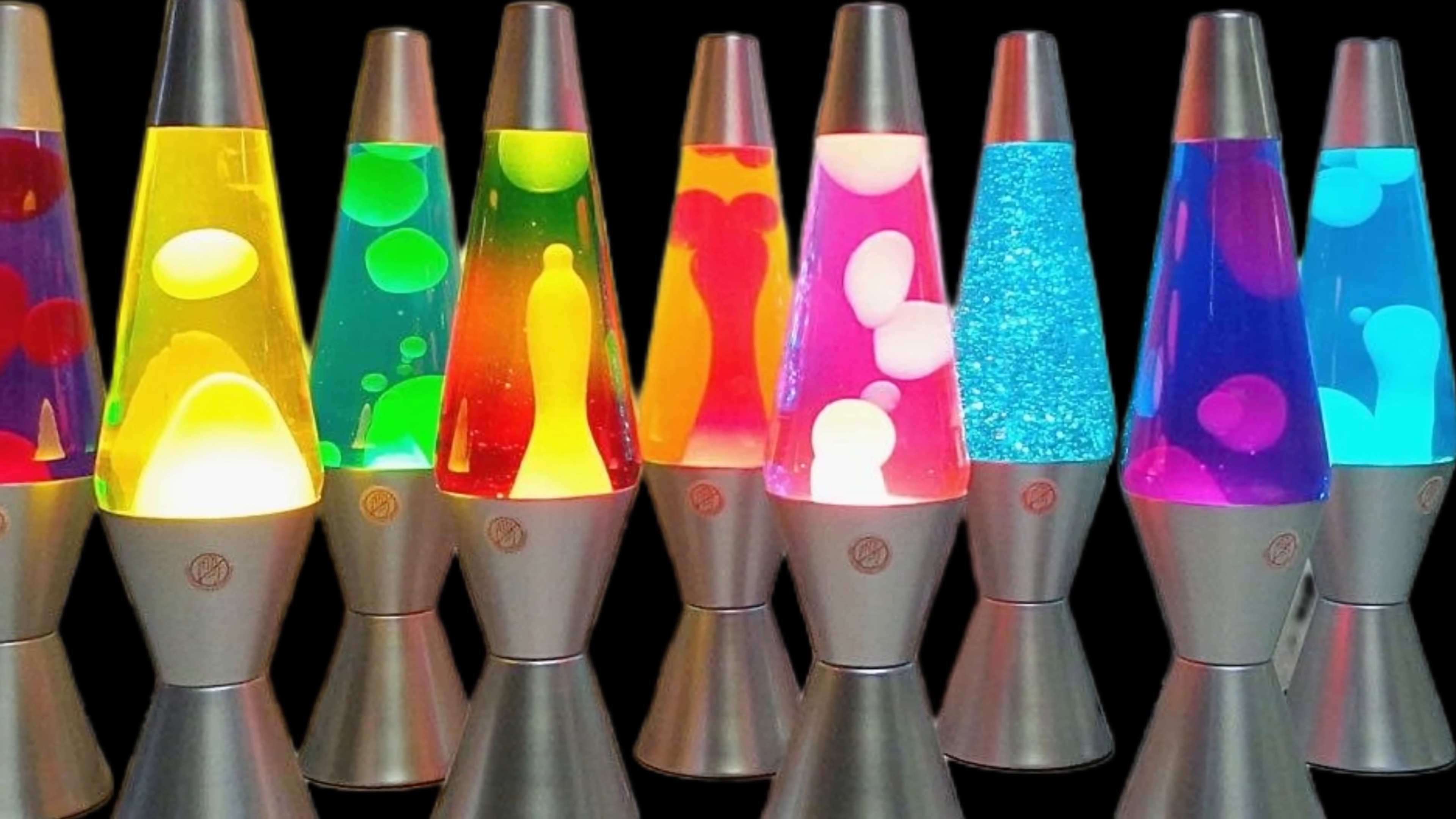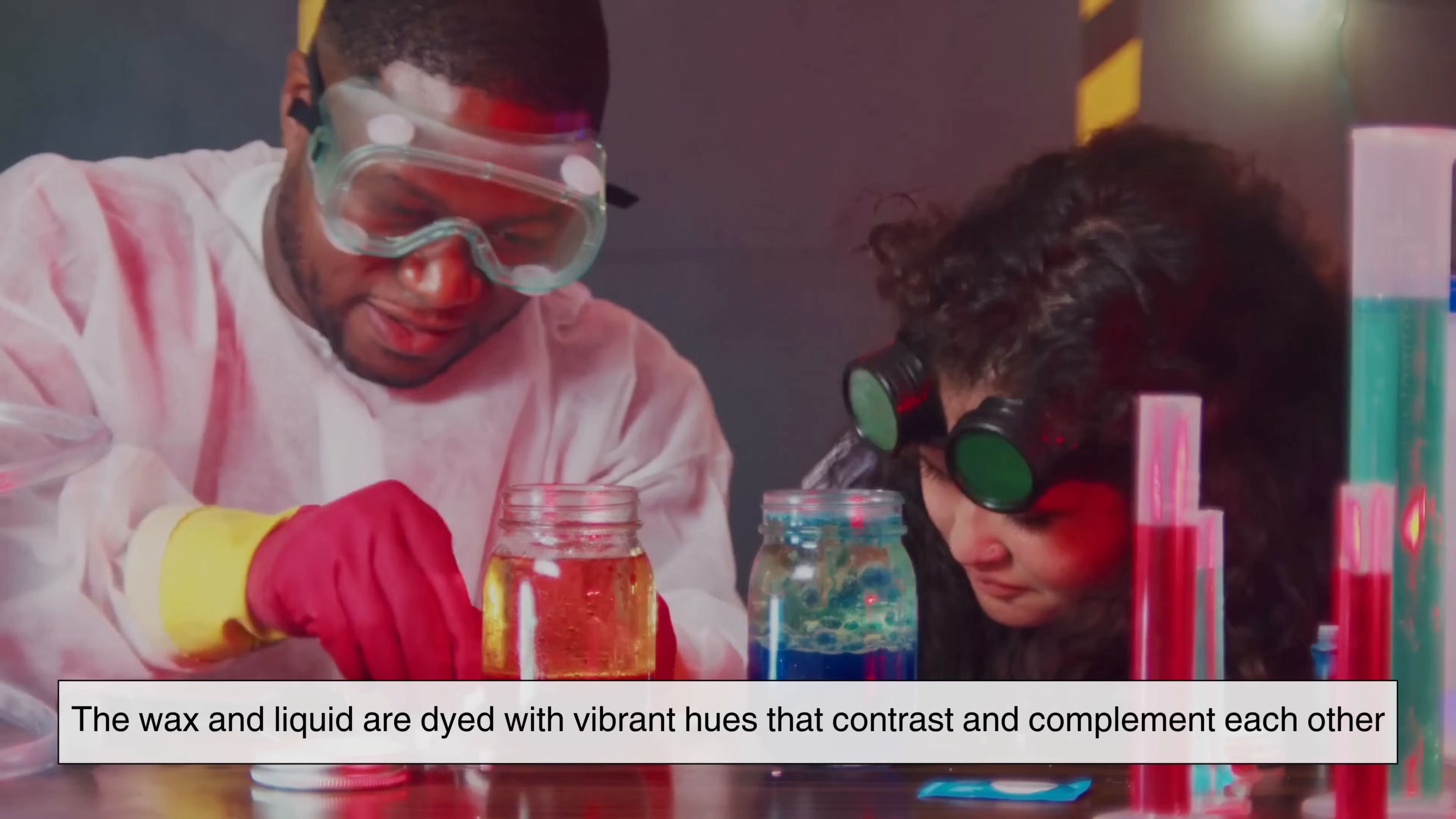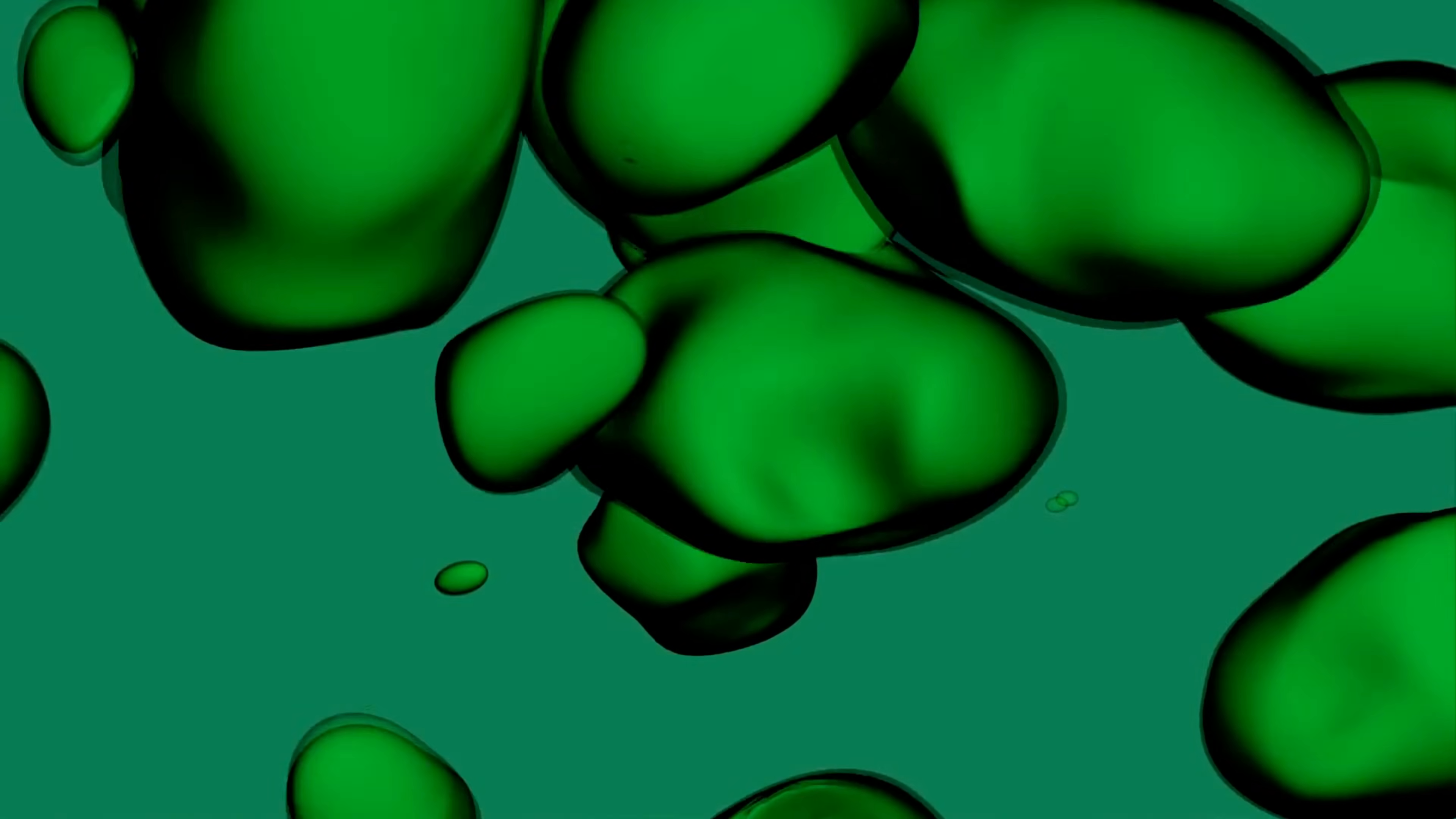Color choice in lava lamps, while not affecting the science behind the movement, greatly enhances the visual experience. The wax and liquid are dyed with vibrant hues that contrast and complement each other, adding another layer of allure to the display. A deep blue liquid paired with golden yellow wax might evoke an undersea world, while bright red wax and clear liquid feels volcanic and primal. These combinations stir emotion and imagination, turning the lamp into a kind of glowing sculpture. It's why lava lamps continue to be used not just as lighting, but as mood pieces, ambient art, and even meditative tools.